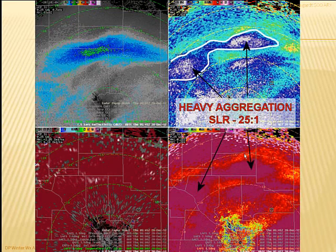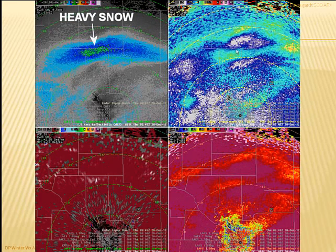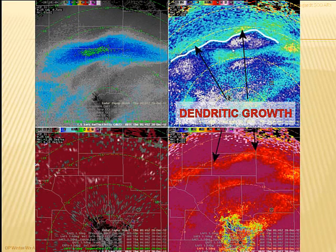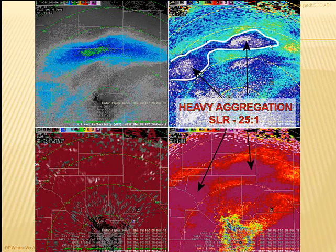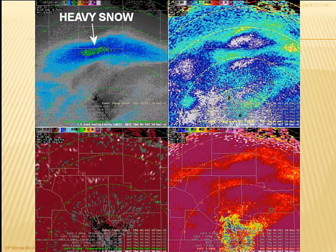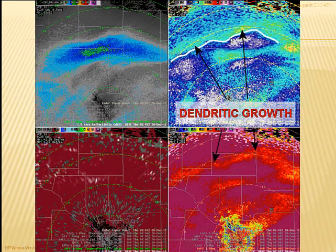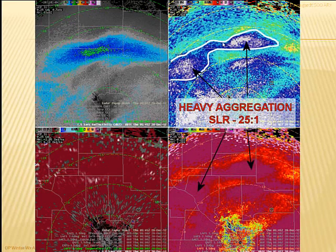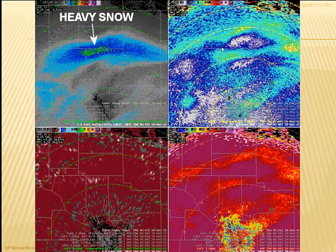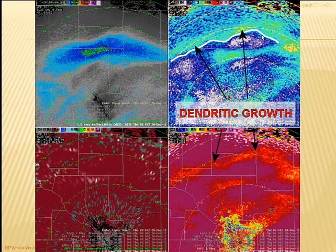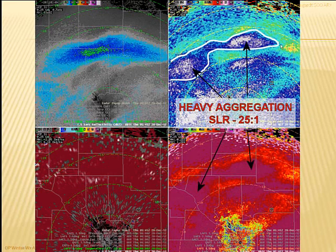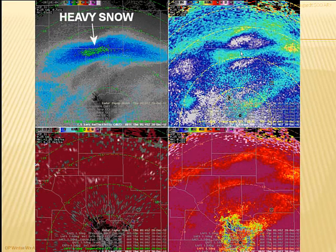In this heavily aggregated area, the SLRs are 25 to 1. If you're a forecaster sitting at the radar, you can look at this and assess your forecast — maybe you need to reassess it. This is a really good signature of the bounded area of aggregation.